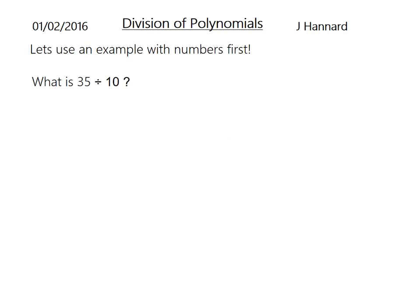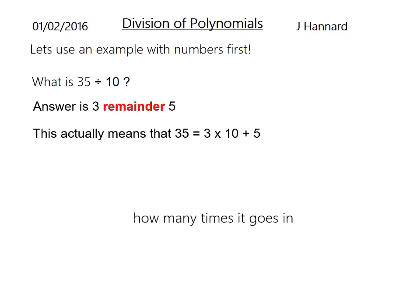Let's use an example with numbers. What is 35 divided by 10? You would instantly think 3.5 but actually if you think about it this way, it's 3 remainder 5 because there's 3 tens in 35 and then you've got 5 left over. That means 35 equals 3 times 10 plus 5. That's what we'll be talking about today with division of polynomials.